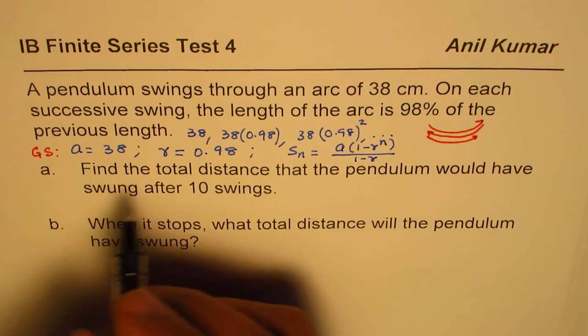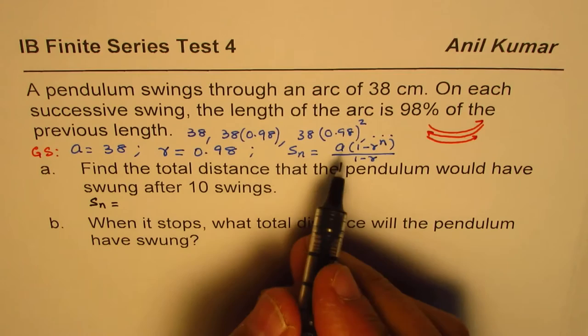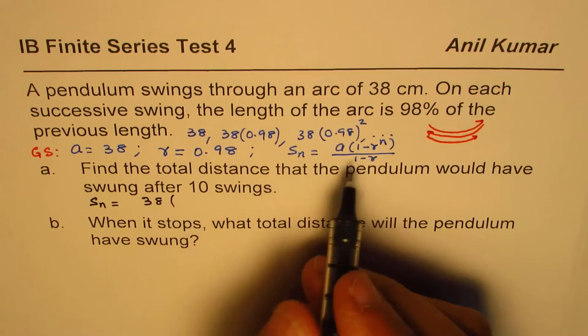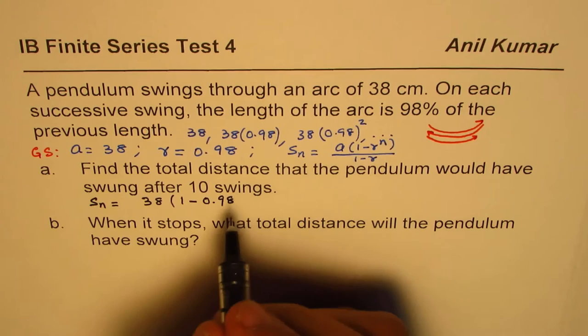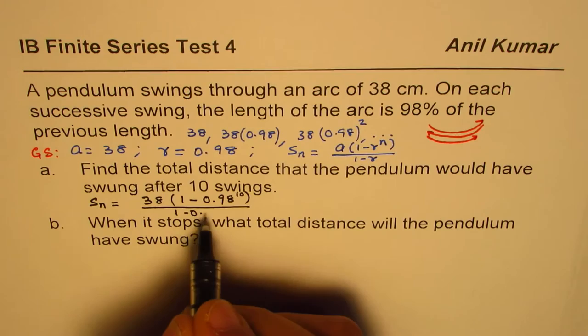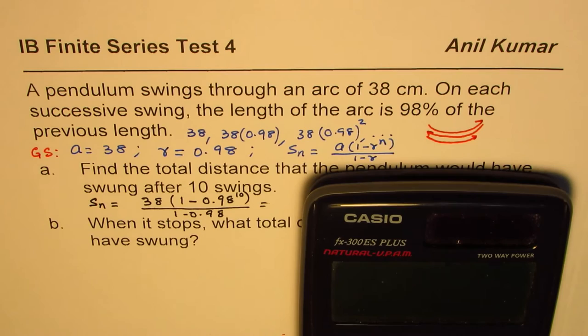You can pause the video and answer the question. So the answer will be: for the 10th swing, total distance will be a is 38 times (1 minus 0.98 to the power of n, which is 10) divided by (1 minus 0.98). We can use the calculator to calculate this.